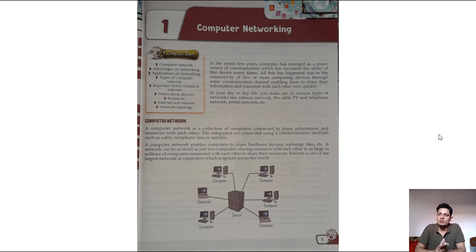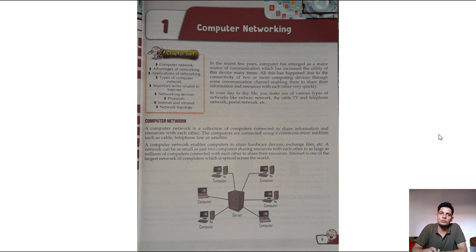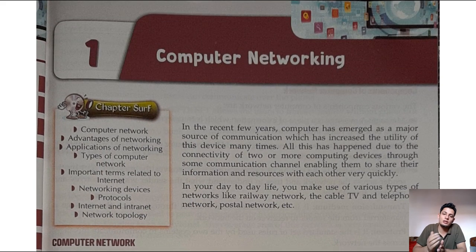Chapter one is Computer Networking. The first question that arises is: what is a computer network? A computer network means the connection of more than one computer for the purpose of sharing information, data, and resources. For example, calling each other using a phone — a phone is also a category of computer. Regarding resources, for example with 50 computers, only one printer is required. Via networking cable, all 50 computers can print on a single printer.